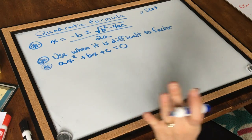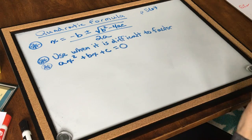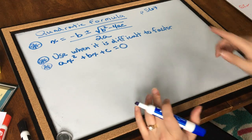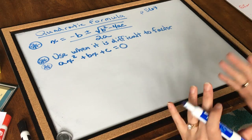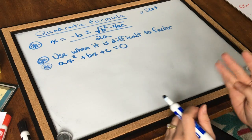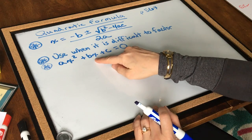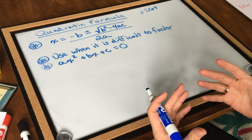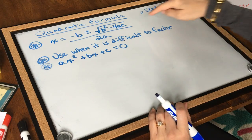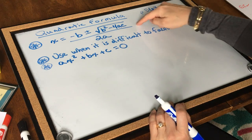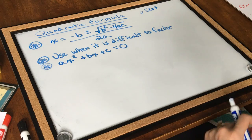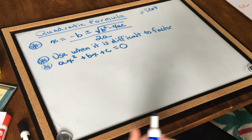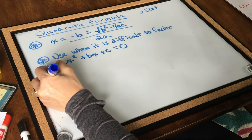I would not recommend using the quadratic formula in all situations. It's best to use in situations where it's difficult to factor. So if you can factor a trinomial or a binomial, or if you can use square roots or some other method, do that. But when you have a situation where it's tough, then the quadratic formula is useful. Let's try an example and see how this works.